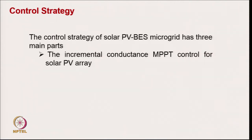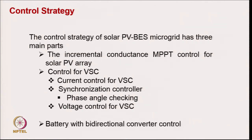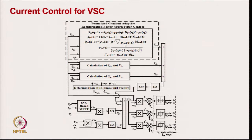The control system has the following parts: maximum power tracking algorithms for maximum power extraction from the solar PV array; control of voltage source converter for current control in grid-connected mode; synchronized controller for grid appearance and disappearance handling islanding and reconnection; you check the phase angle of the point of common coupling voltage as well as the grid voltage and synchronize; and voltage control for islanding operation of the voltage source converter and battery with bi-directional control.